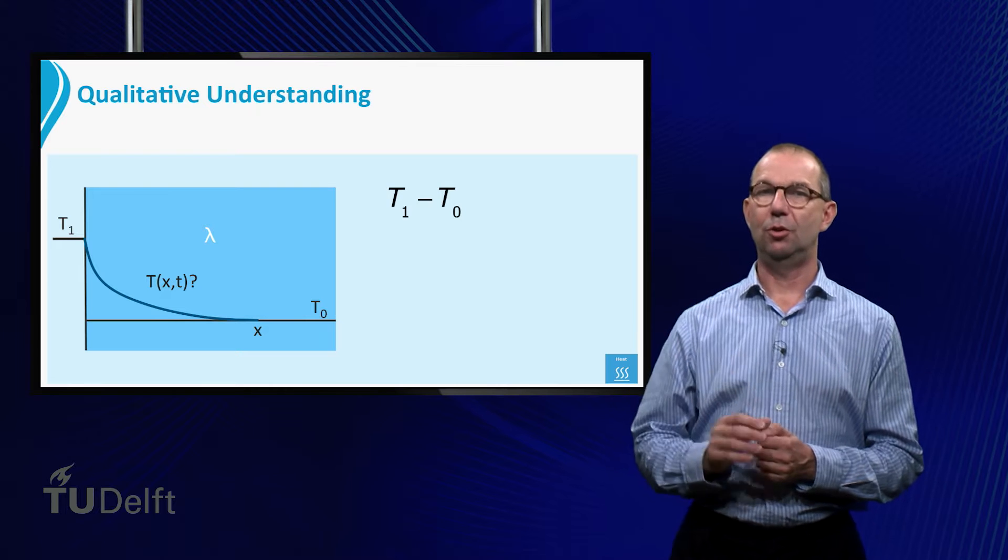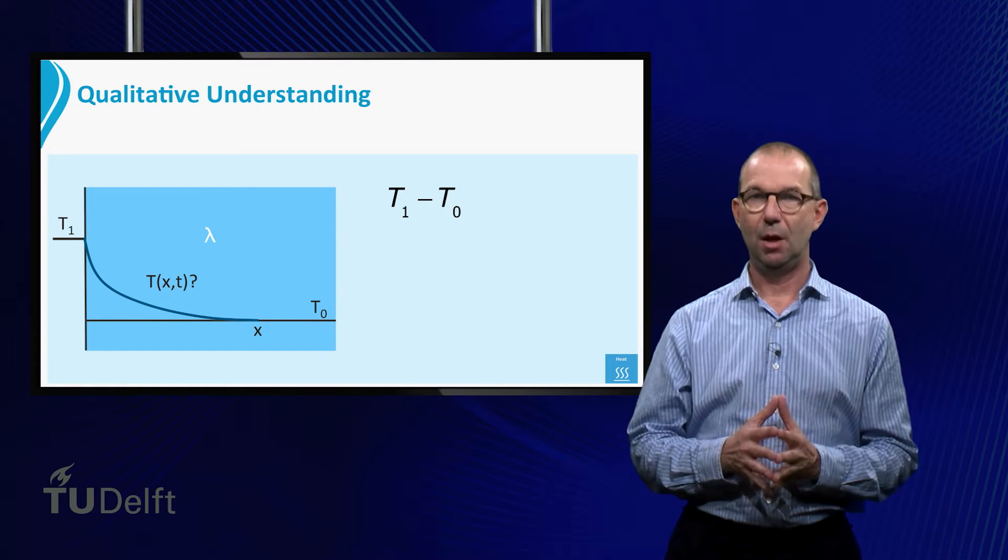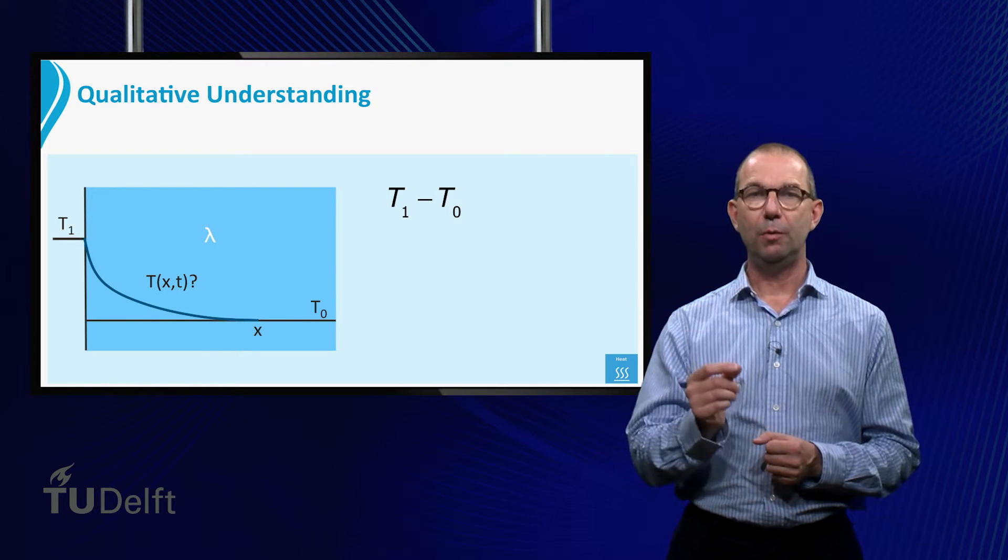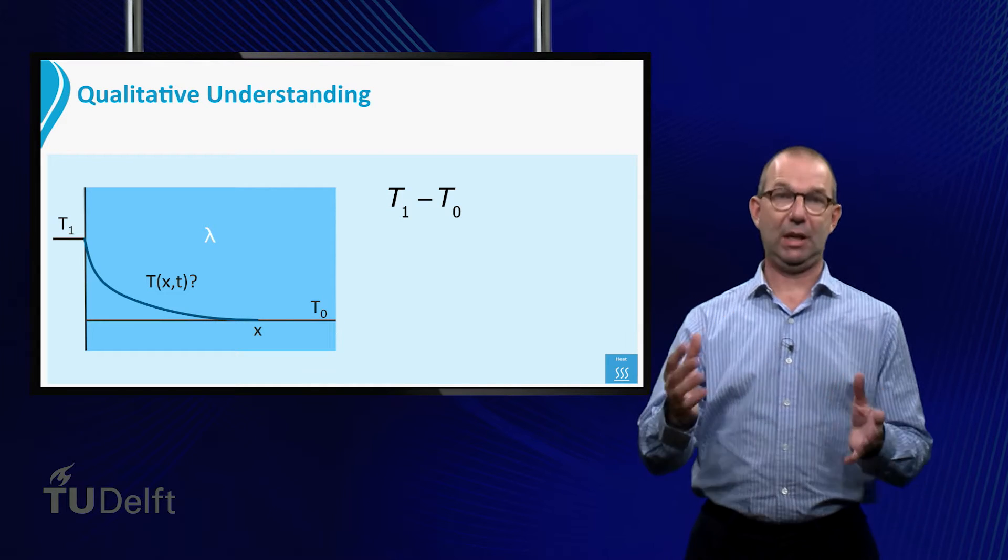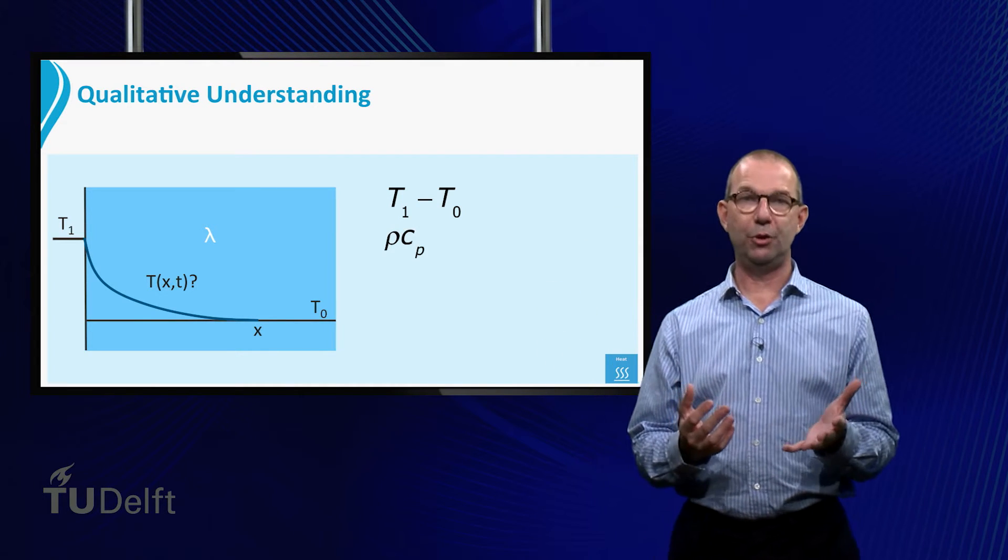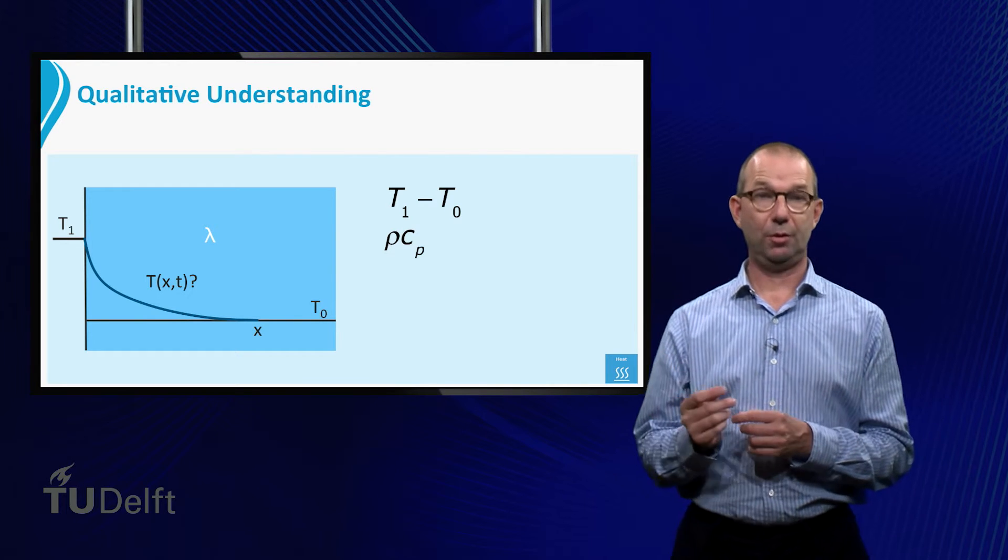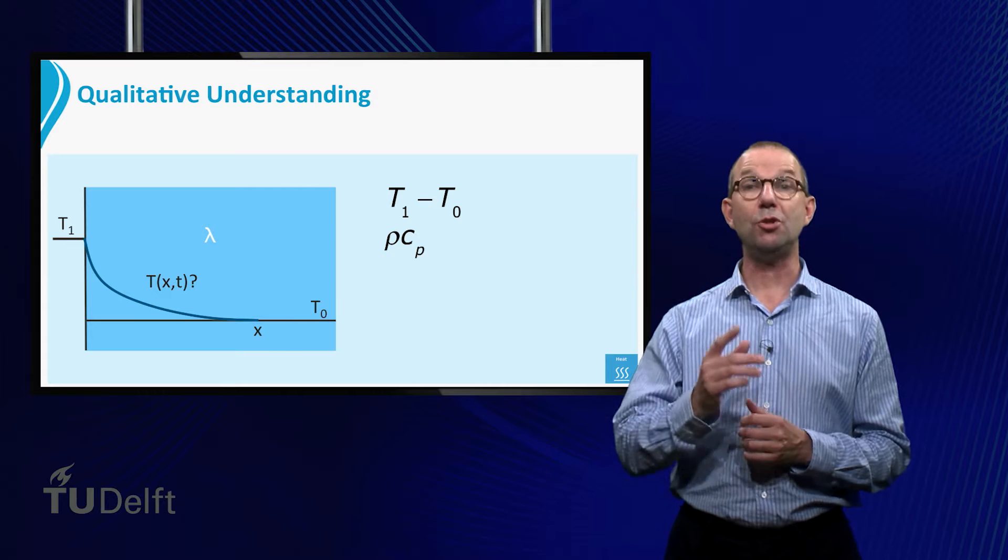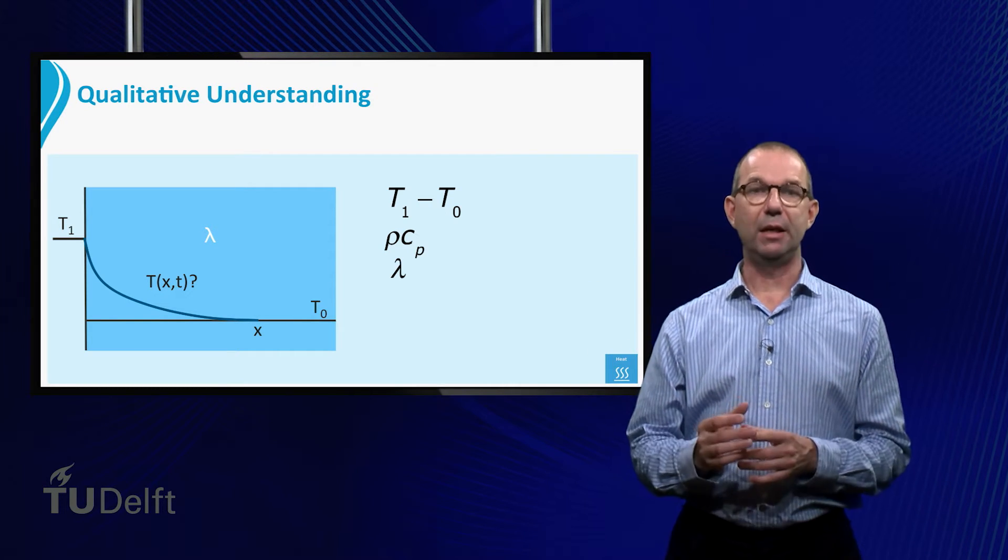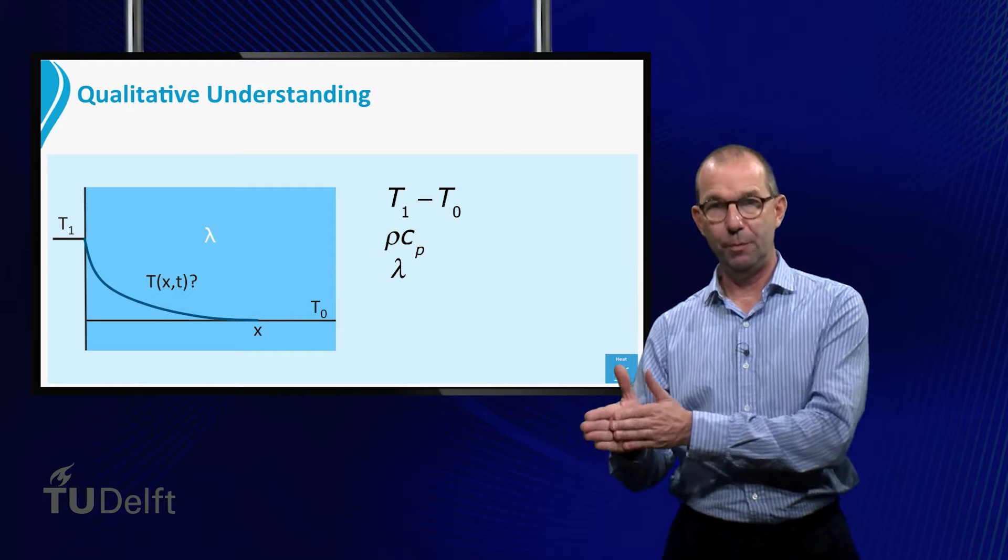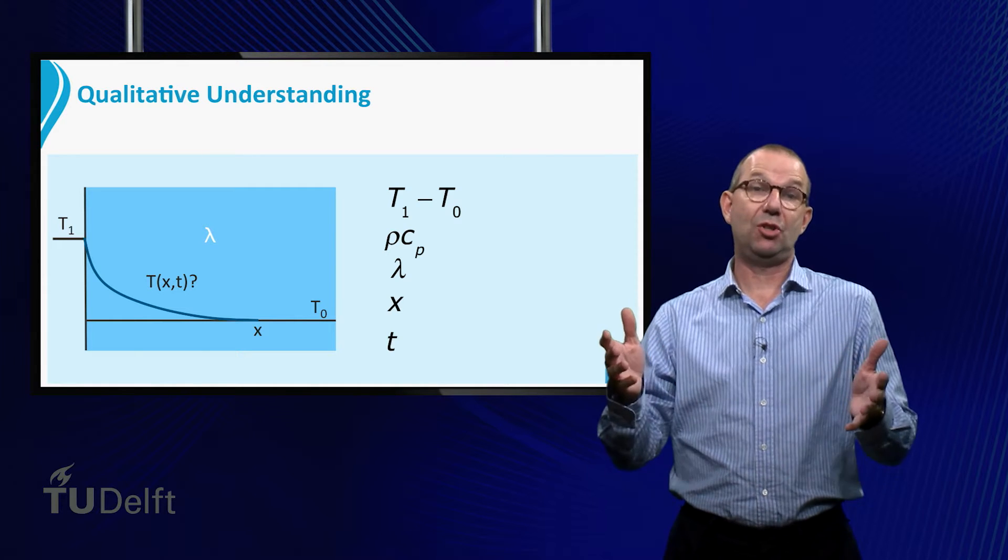Obviously, the driving temperature difference T1 minus T0 plays a role. From the heat balance, we know that thermal energy plays a crucial role, thus we can expect rho times Cp of the strip to be important. The heat transport is via conduction, thus from Fourier's law we know that lambda plays a role. Finally, the distance from the left hot interface must play a role, as well as time T itself.